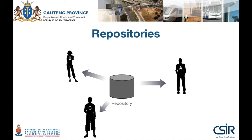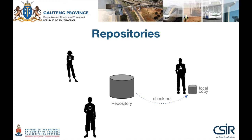Consider these three people again — they are interested in working on the same document stored on the repository, so let's introduce some terminology. If A wants to work on the document, he needs to first check out a local copy, meaning he makes an exact copy of the latest version of the repository on his own machine. At the same time, Ms. B and Mr. C might do the same thing.